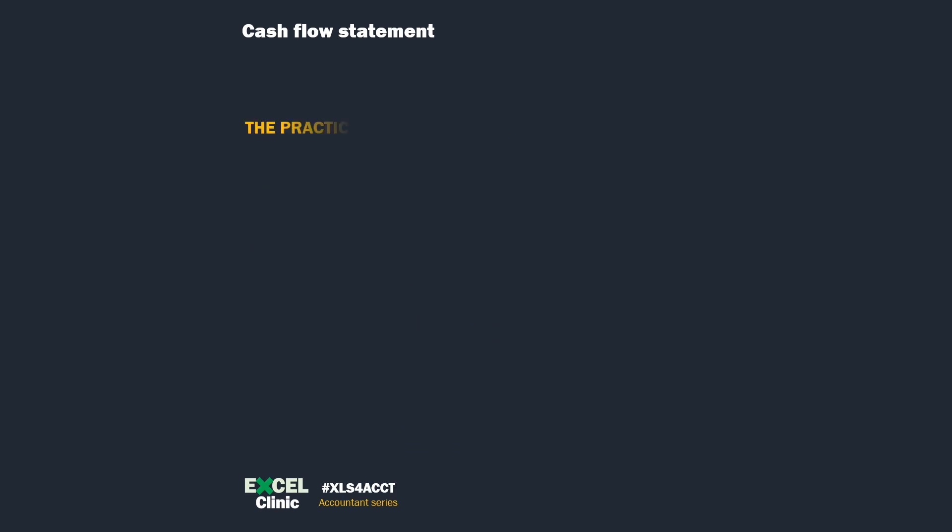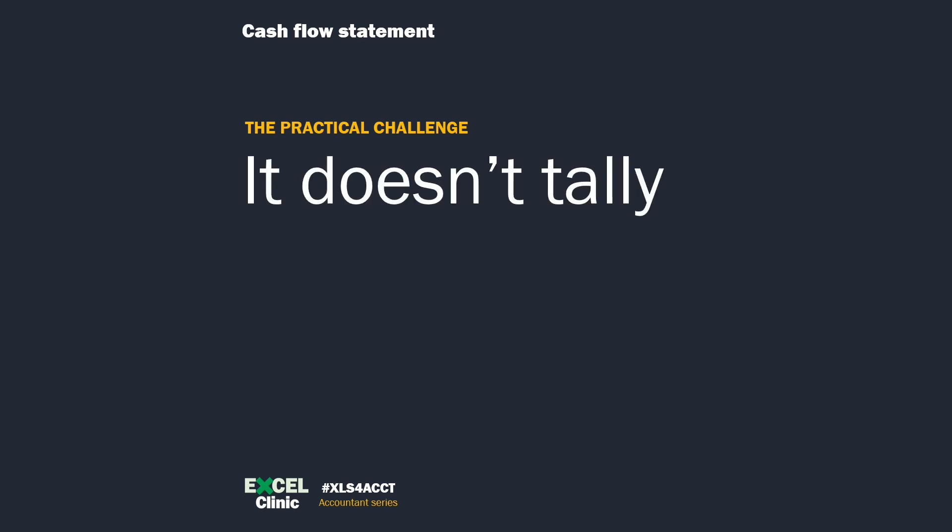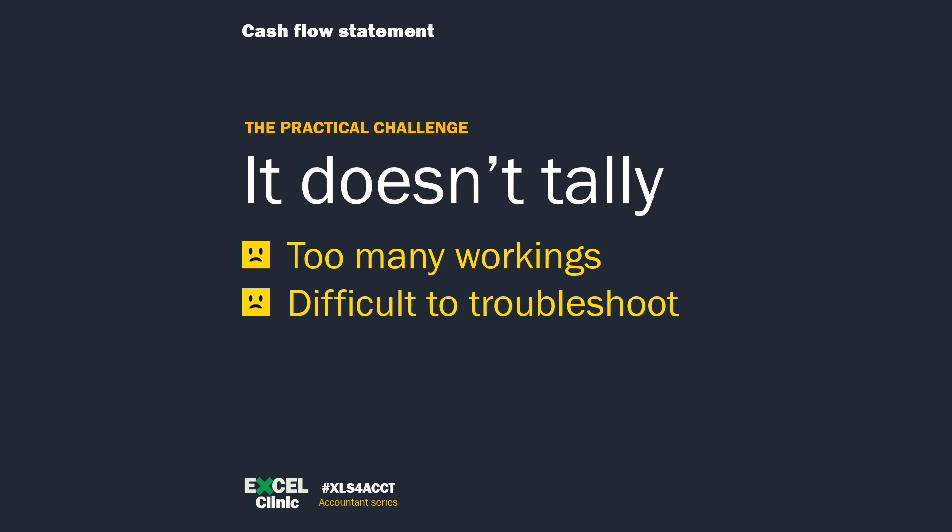Accountants structure their cash flow workings differently depending on their personal preferences and the complexity of the entity. There is one common practical challenge: it doesn't tally. Preparation of a cash flow statement can be tedious. After spending hours or even days, the computed ending cash balance does not tally with the balance presented on the balance sheet. The cash flow statement is very prone to error because of the manual work. One traditional way is to have a working file for each line item, but you could have too many workings leading to more errors, and if there is an error it is very difficult to troubleshoot.